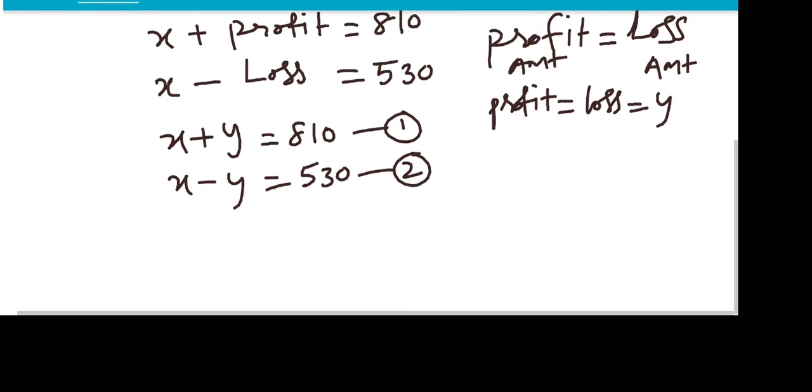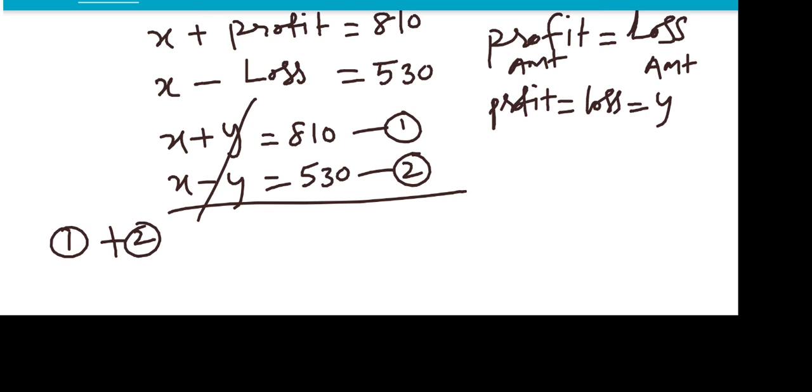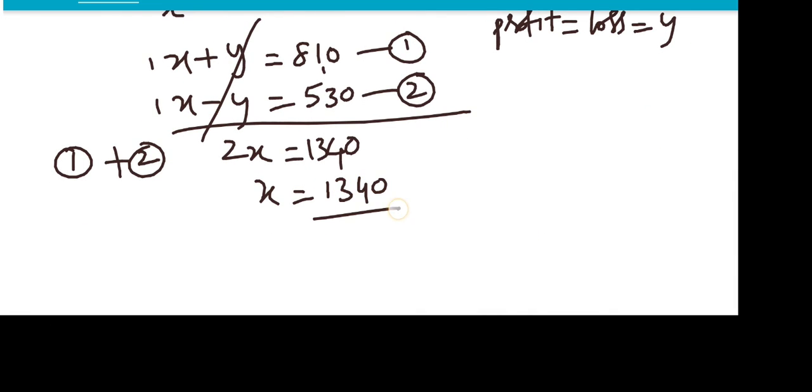Now we'll add equations 1 and 2. Plus y minus y cancels out, giving 2x. 810 plus 530 equals 1340, so 2x equals 1340. Therefore x equals 1340 divided by 2.